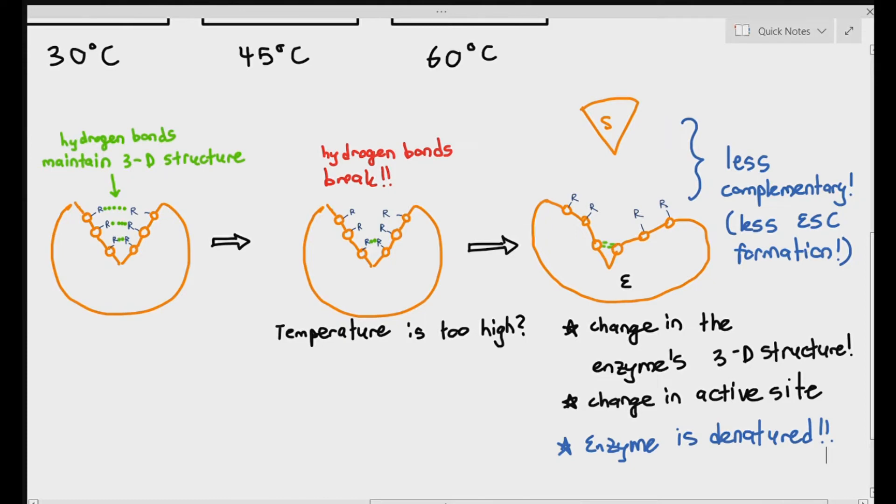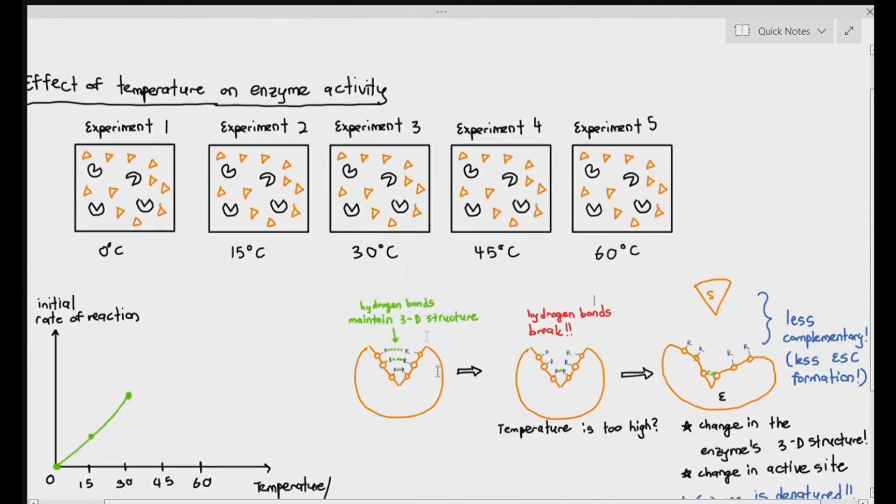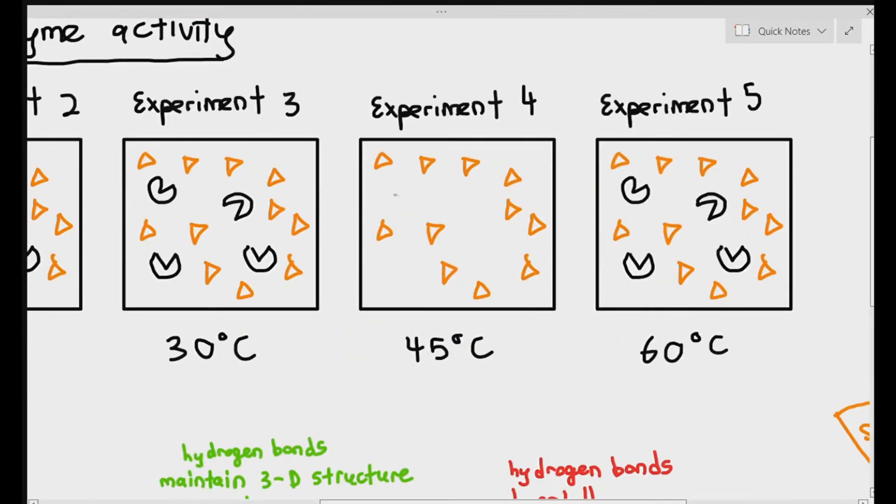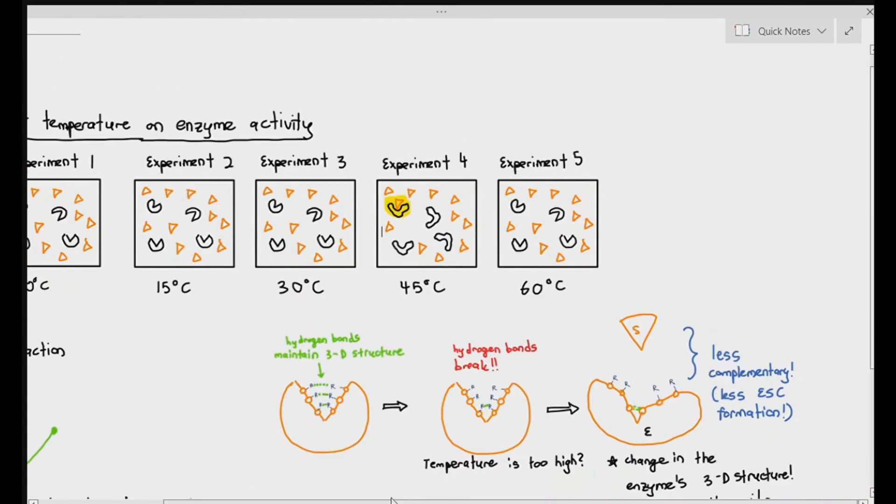When the 3D structure of the enzyme changed due to a higher temperature, we will say that the enzyme is denatured. I have to redraw my enzymes and show you that the shape of the 3D structure is altered. When the shape of the 3D structure is altered, it may be able to form the ES complex, but it will not be able to form four ES complexes. In this case, theoretically, it might just form one ES complex due to the difficulty of the substrate to bind to the enzymes. So at 45 degrees Celsius, the initial rate of reaction is one product per second.